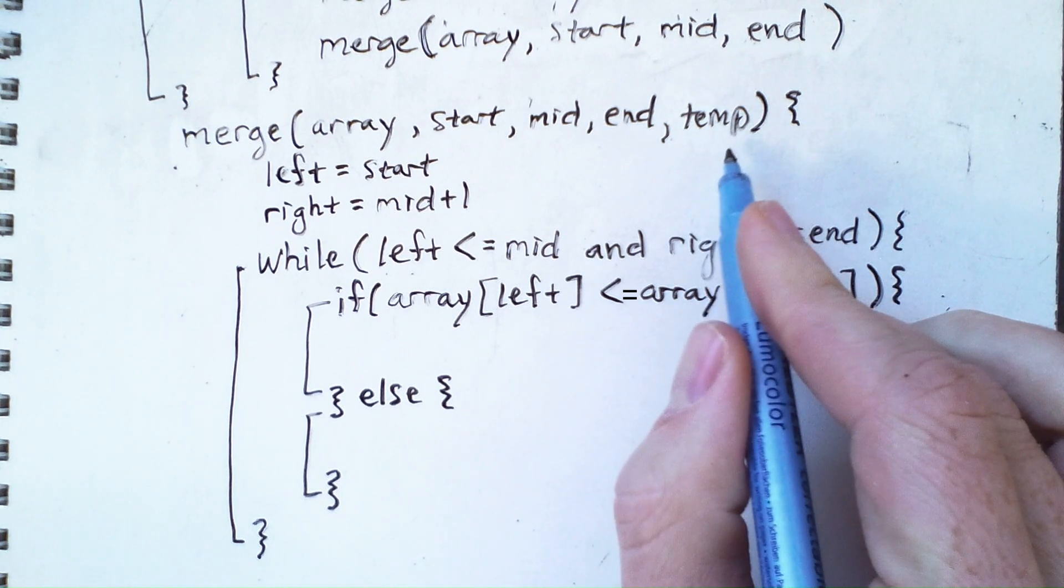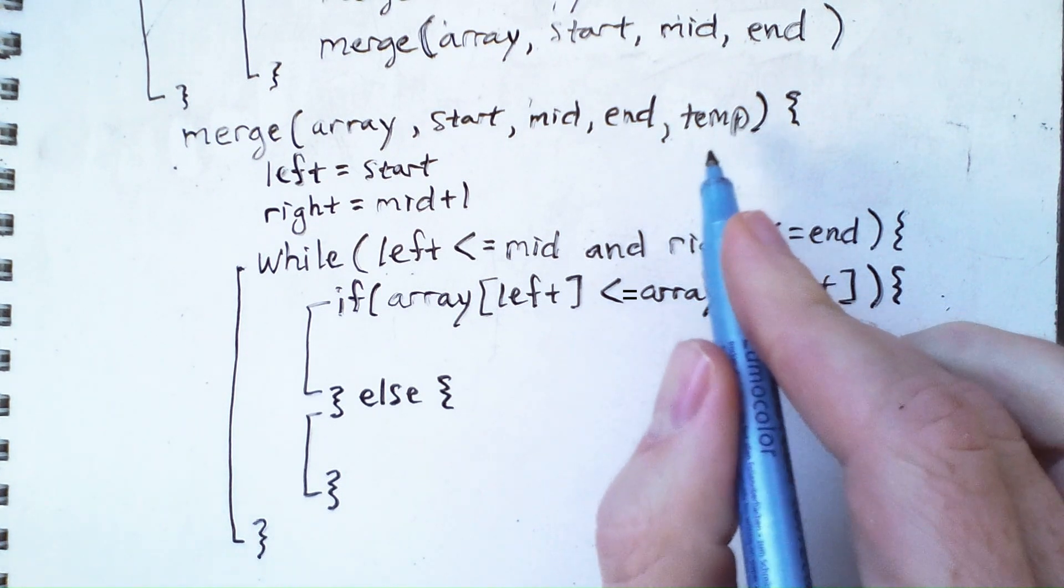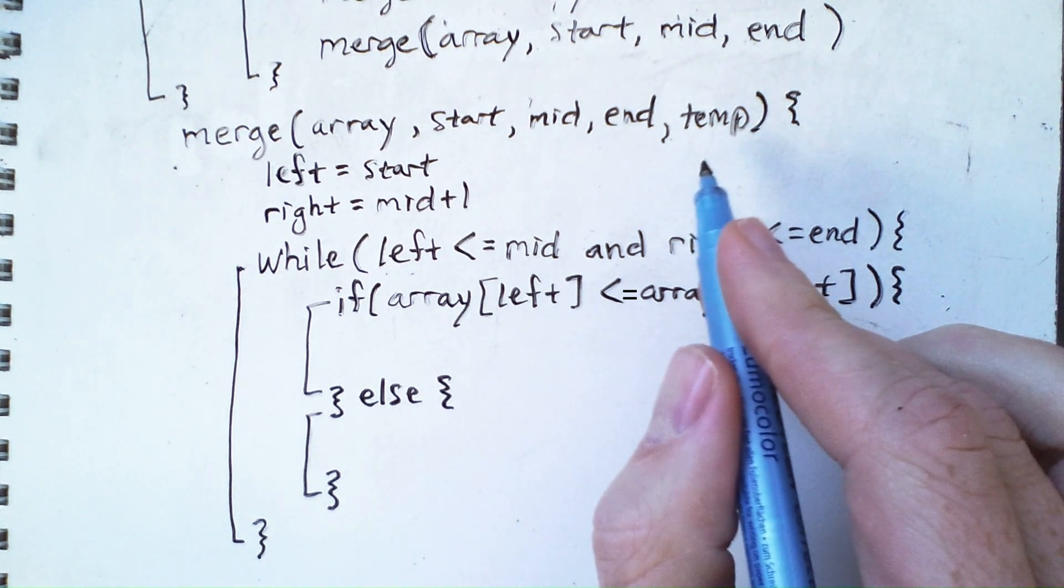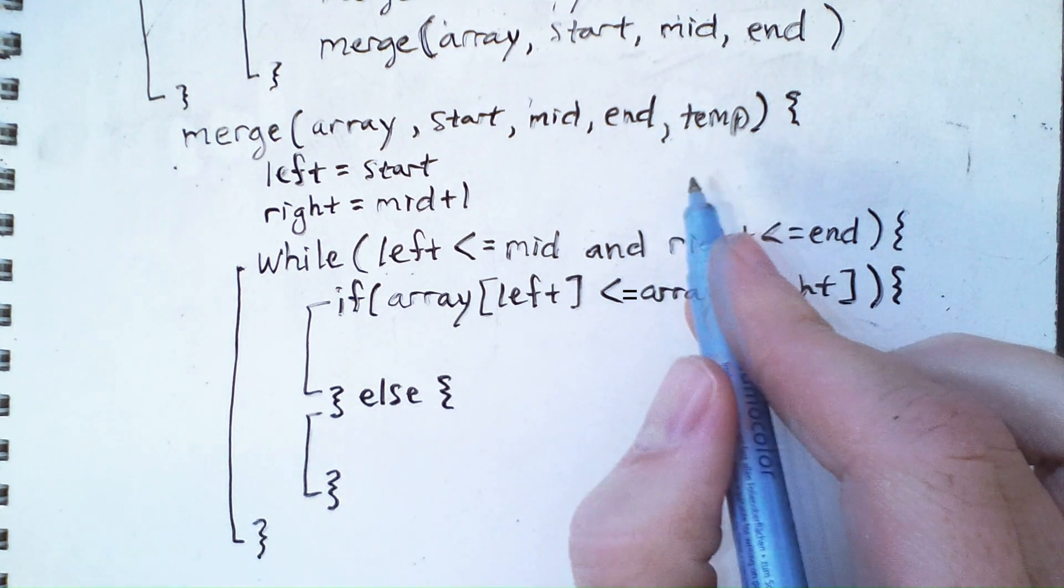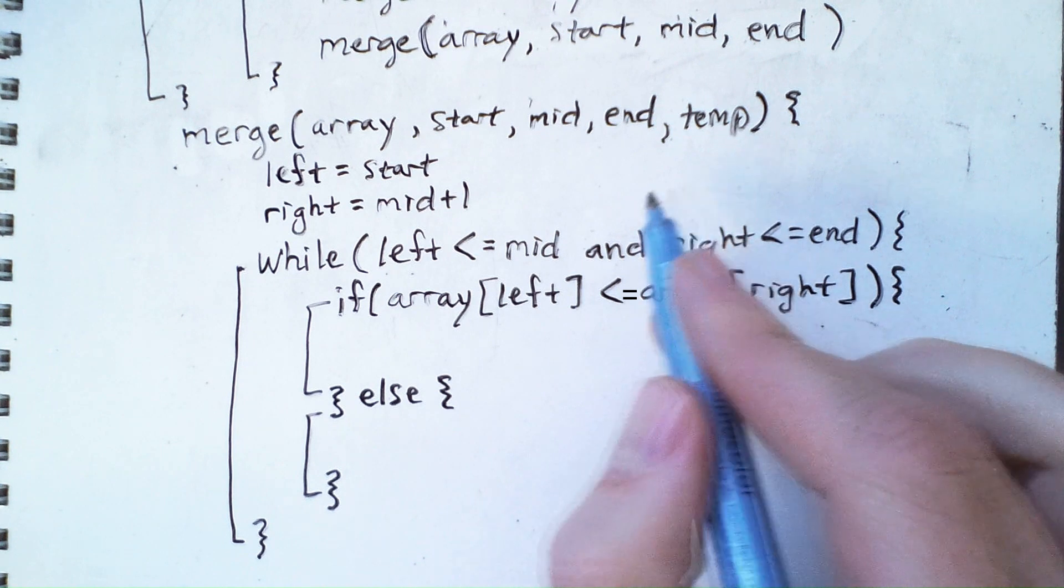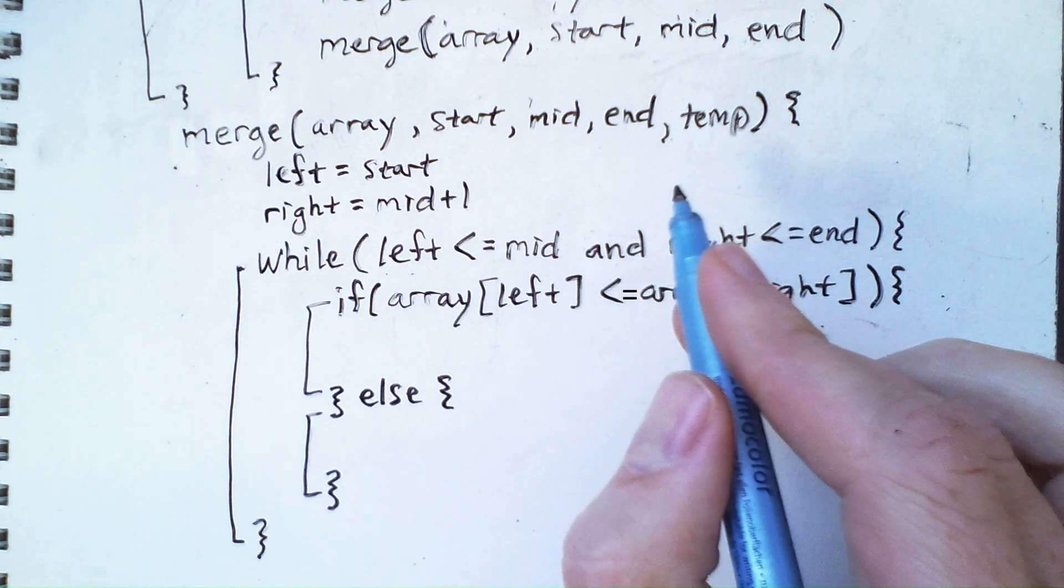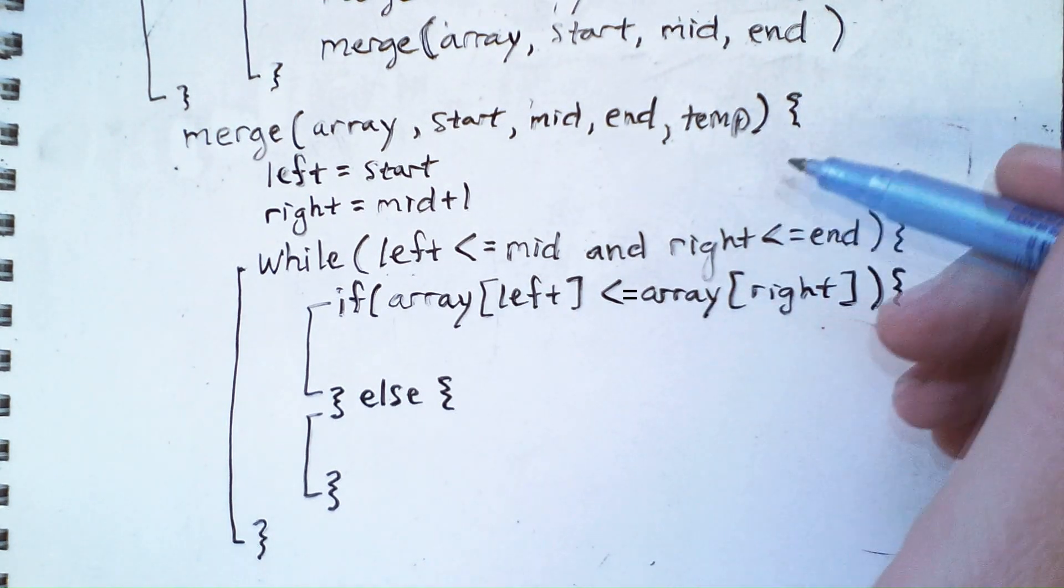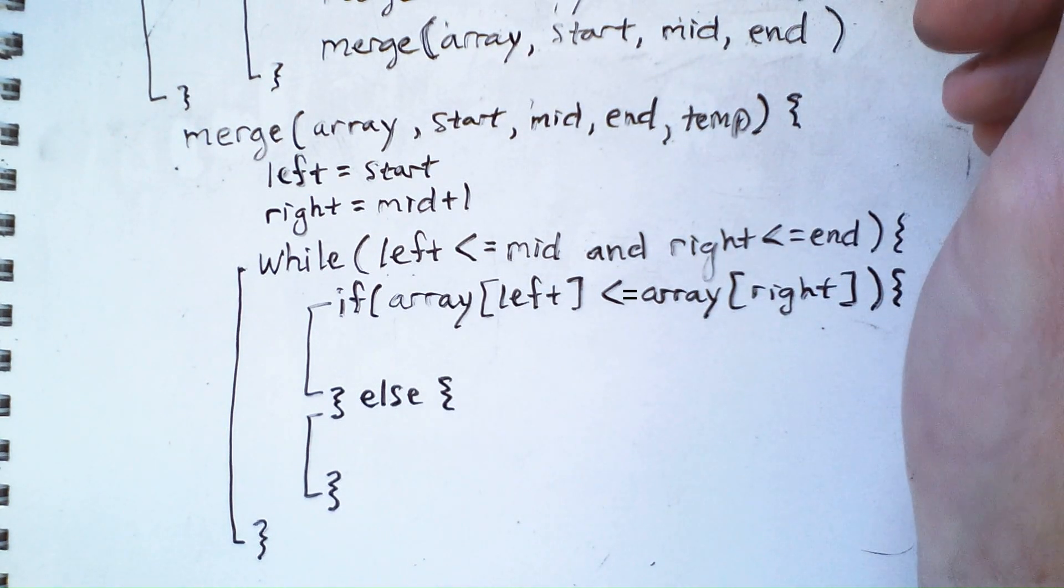So typically, the way that merge and therefore merge sort is implemented is with an auxiliary storage array. So this is a temporary array. Now, the assumption here is that we will initialize this array at the beginning and then reuse it over and over again so that we're not constantly wasting time allocating array storage space.